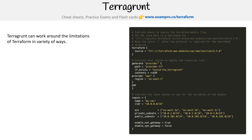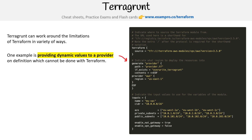One example is being able to generate dynamic providers. I don't mean dynamic in the sense of that dynamic value feature of Terraform, but just the fact that at the time of this, it's very hard to inject or write out providers. So they have this generate function that allows you to get around that.